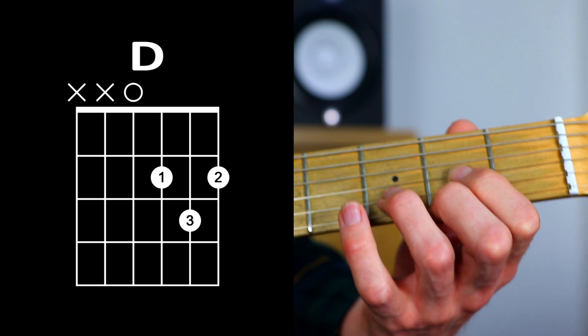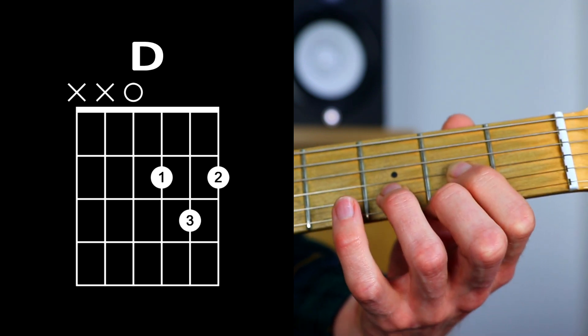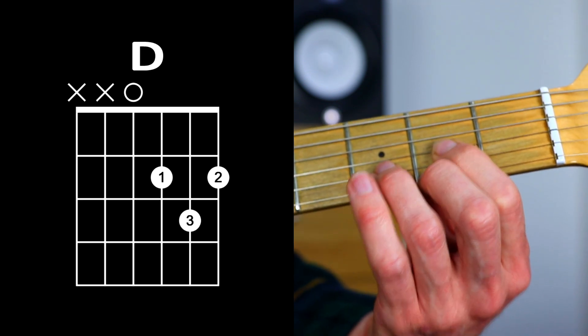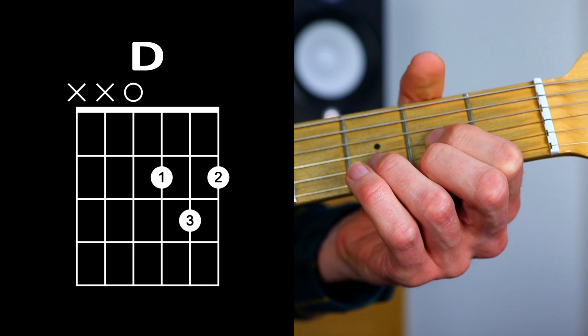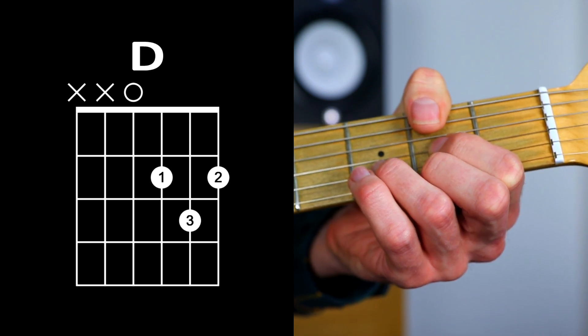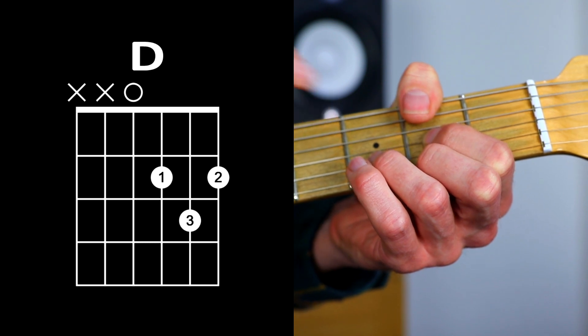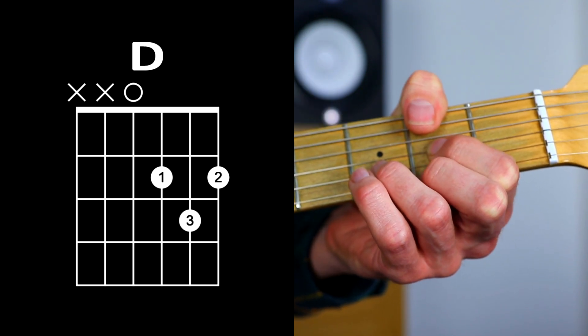Depending on what's being played, sometimes you'll see people with the thumb behind the neck, sometimes with the thumb creeping over. The thumb creeping over mutes the low E and A strings, which is actually the easiest way to mute them when playing a D chord.